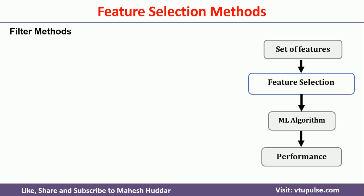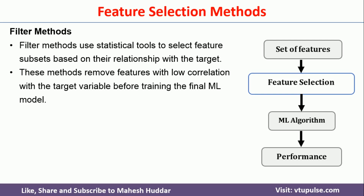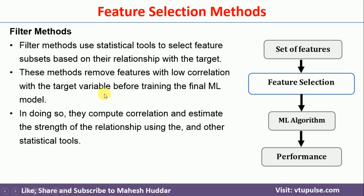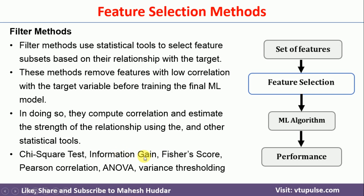The next method is filter methods. In the filter method, given a set of features, we try to identify the correlation of each feature — say feature x — with respect to the target variable. If it is correlated with the target variable we retain it; otherwise we remove it. To find the correlation between a variable and the target, there are many statistical tools available, such as chi-square test, information gain, Fisher score, Pearson correlation, ANOVA, and so on. Using these tools we identify the correlation of each input variable with respect to the target, retaining highly correlated features and removing others.